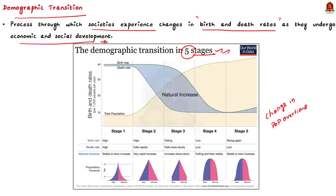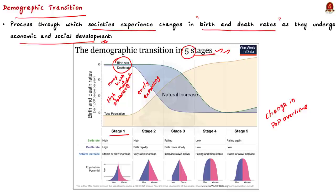Stage 1 is the high stationary stage. In this stage, both birth rate and death rate are high. People have many children because they need them to work on farms, and life expectancy is low due to poor healthcare and sanitation. Then comes Stage 2, the early expanding stage. In this stage, there are improvements in healthcare, sanitation, and food production. Death rates start to decline but birth rates remain high, so the population starts to grow very rapidly. This stage occurs during a country's industrialization phase and is nicknamed the population explosion stage.